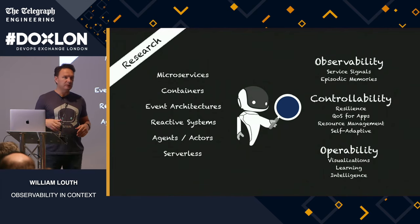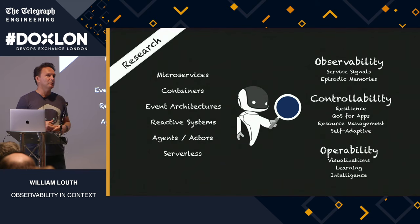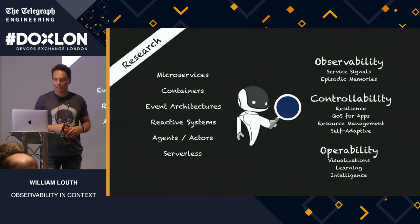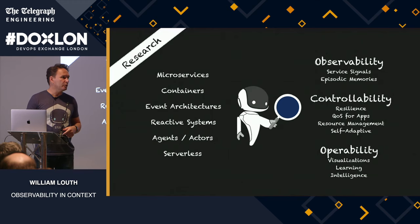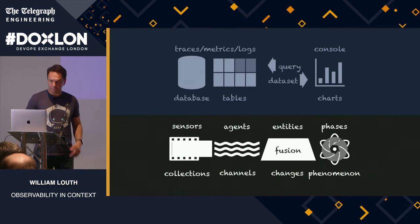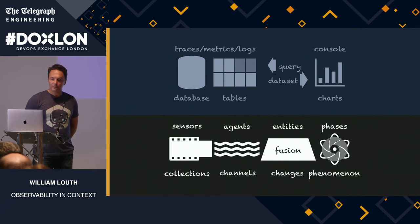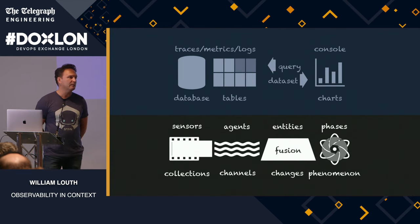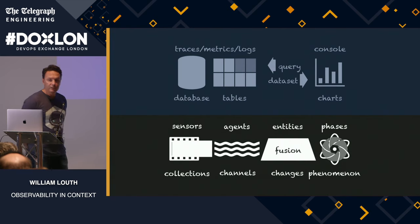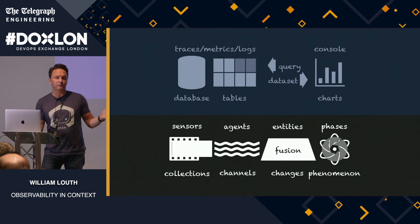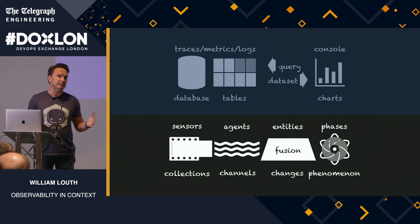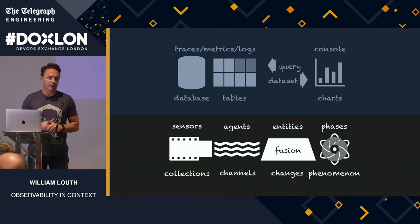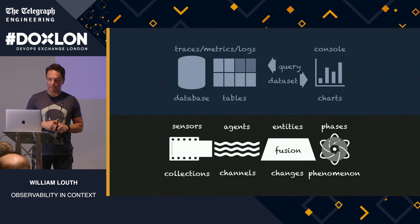So observability — I'll go into how I see that compared to how it's being promoted, and then we'll talk about what controllability is, which is the purpose of observability. When we looked at the market, typically you have trace information, logs and metrics all in some data store, and people have tools querying a database and console. Our view was that had to change.